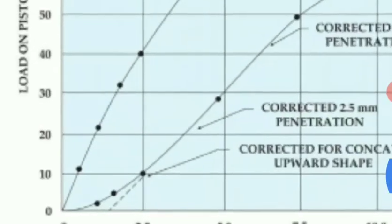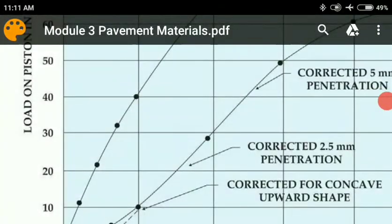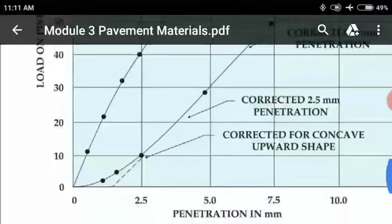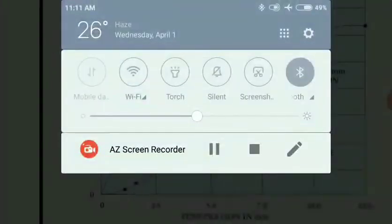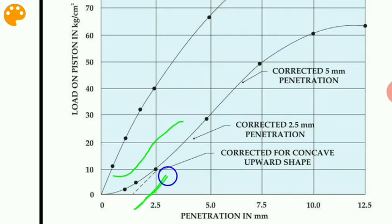In some cases, if we do not get a downward concave curve, we need to draw a tangent line — shown as a dotted line — that just touches the x-axis. From that point where it touches the x-axis, we consider that as the new zero and continue with further penetration values from there.